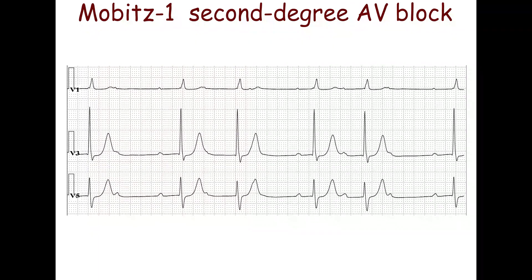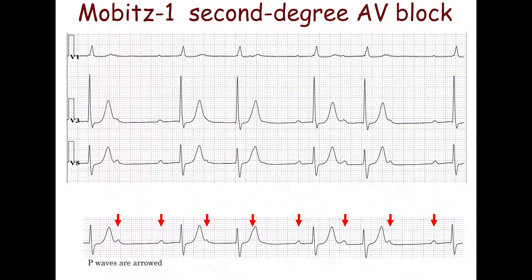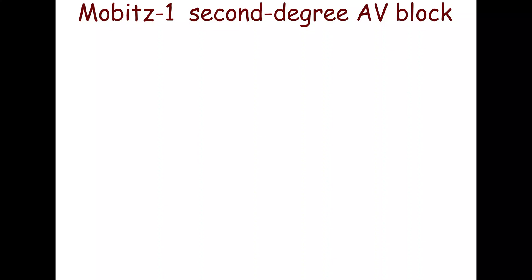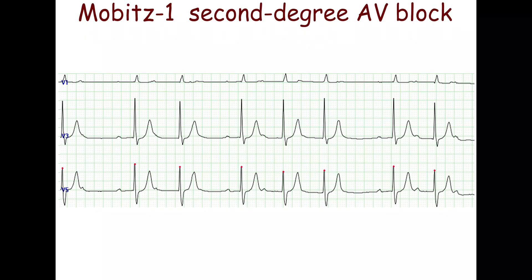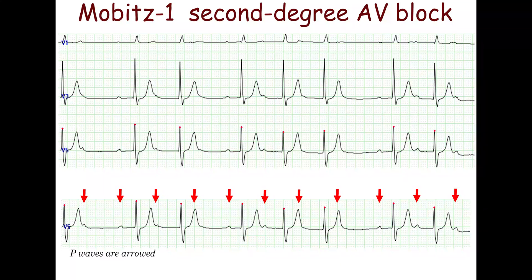Sometimes a constant, repeating conduction ratio is seen in Mobitz 1. On this ECG, there is a constant conduction ratio of 3 to 2. Sometimes the P waves may completely merge with the T waves, making them difficult to find. The PR interval after a non-conducted P wave is shorter than before it, which indicates Mobitz 1 second-degree atrioventricular block.